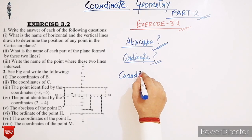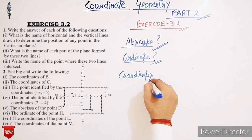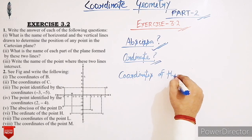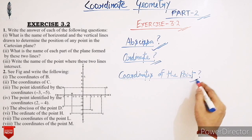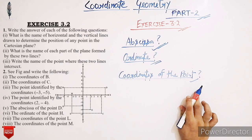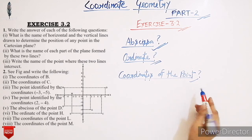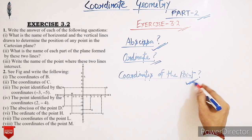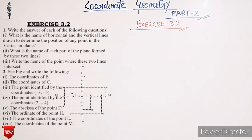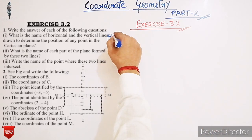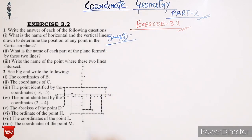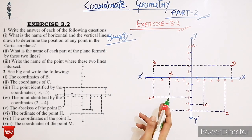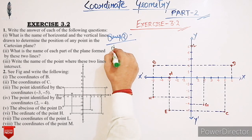Next: what are the coordinates of a point? If abscissa means the x-coordinate of a point is x, and the ordinate means the y-coordinate is y, then (x, y) are called the coordinates of the point. Now see question number two — see the figure and write the following.